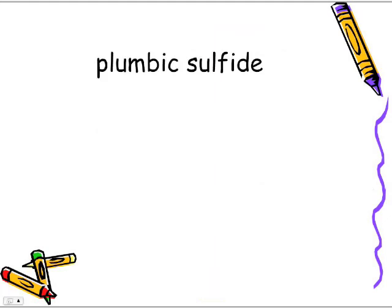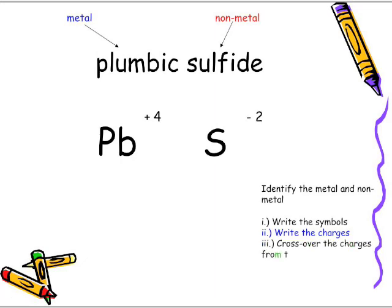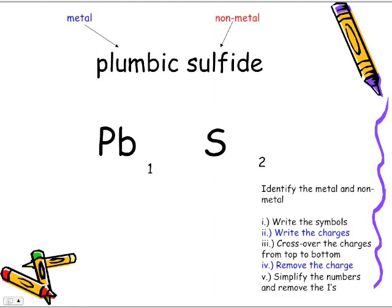Plumbic sulfide — we're making reference to the Latin name, so we're using the classical system. We know it's a metal/non-metal because of the Latin name, and sulfide is the non-metal. Write the symbols: plumbic is Pb, sulfide is S. Write the charges — the IC ending is for the higher charge, so from the PRI table it's plus four. The charge for sulfide is negative two. Cross them over top to bottom, remove the charges, then simplify two to four, which becomes one to two. Remove the ones — the formula for plumbic sulfide is PbS₂.